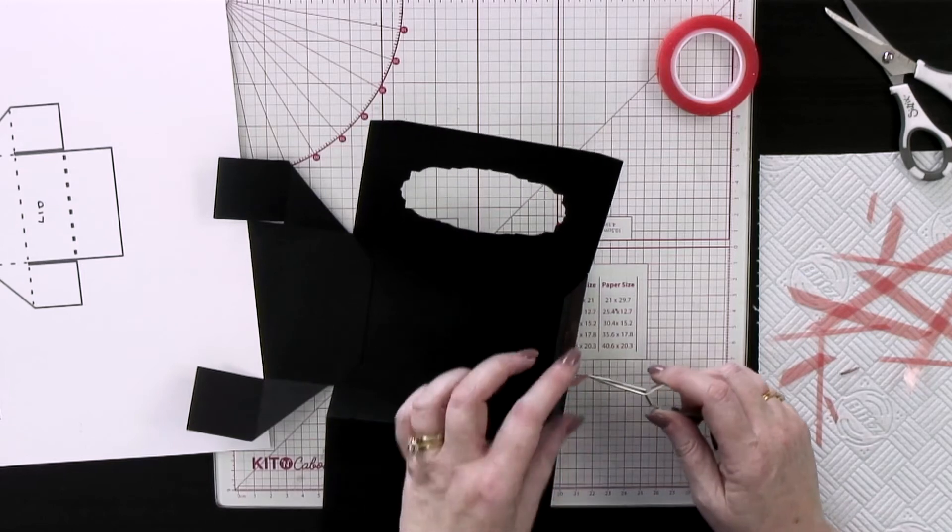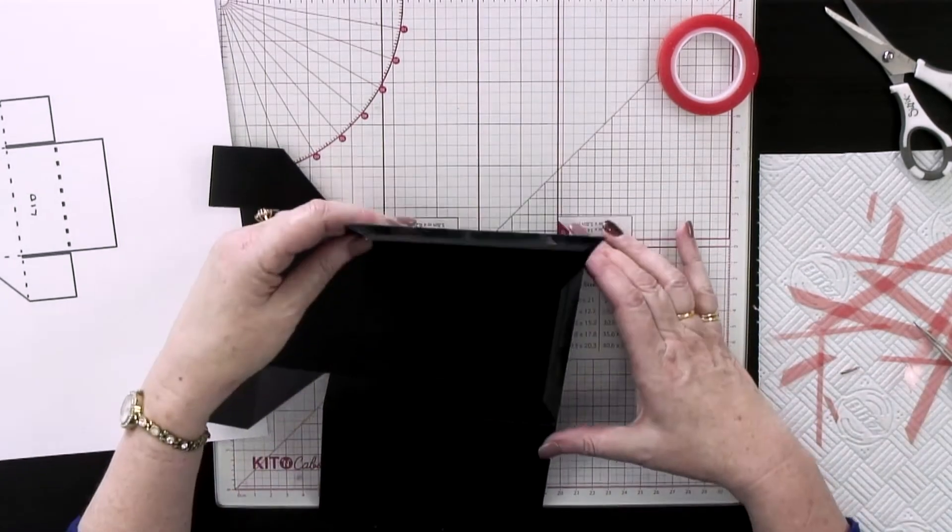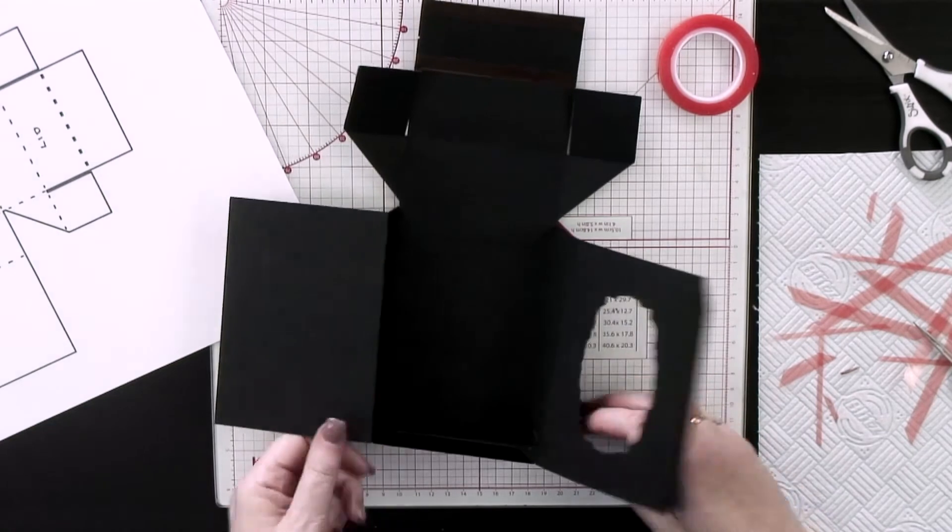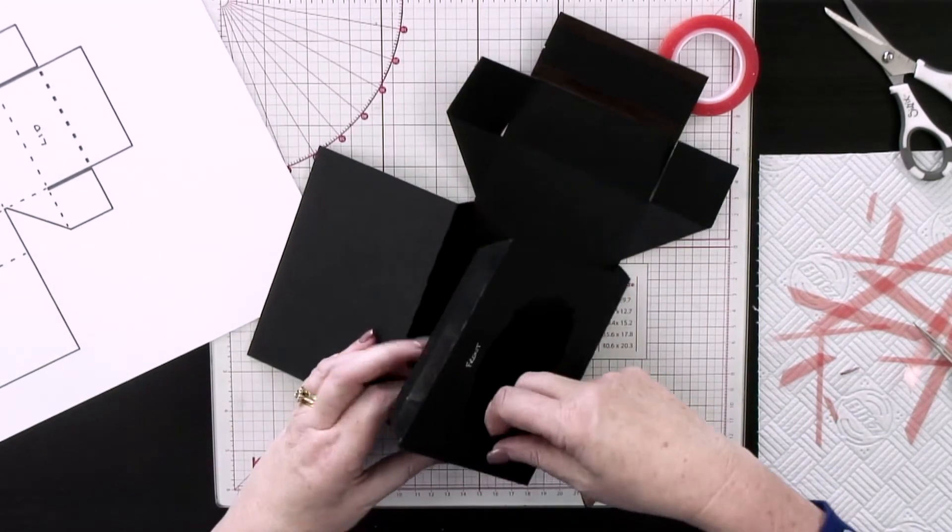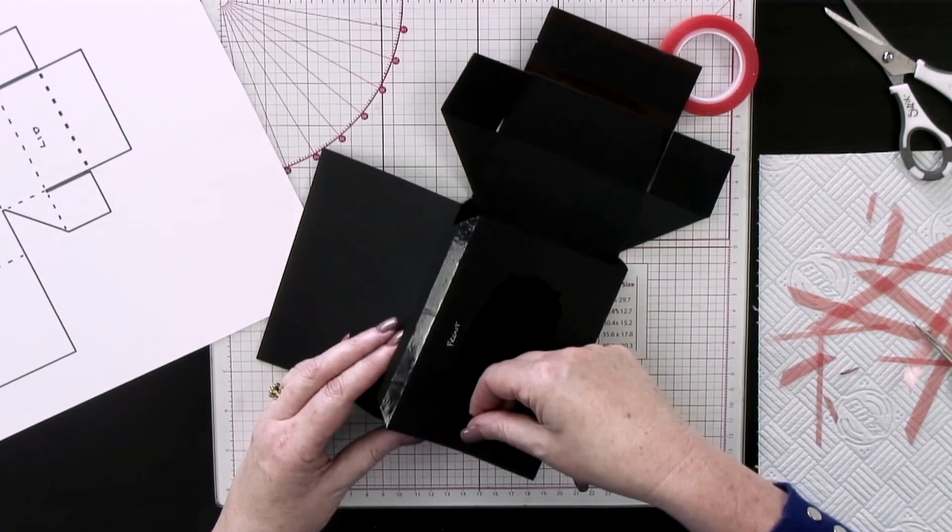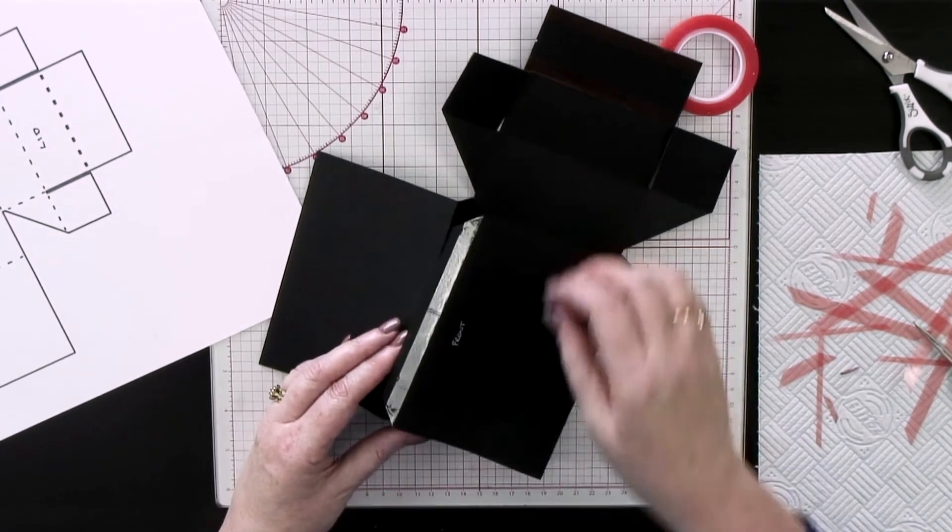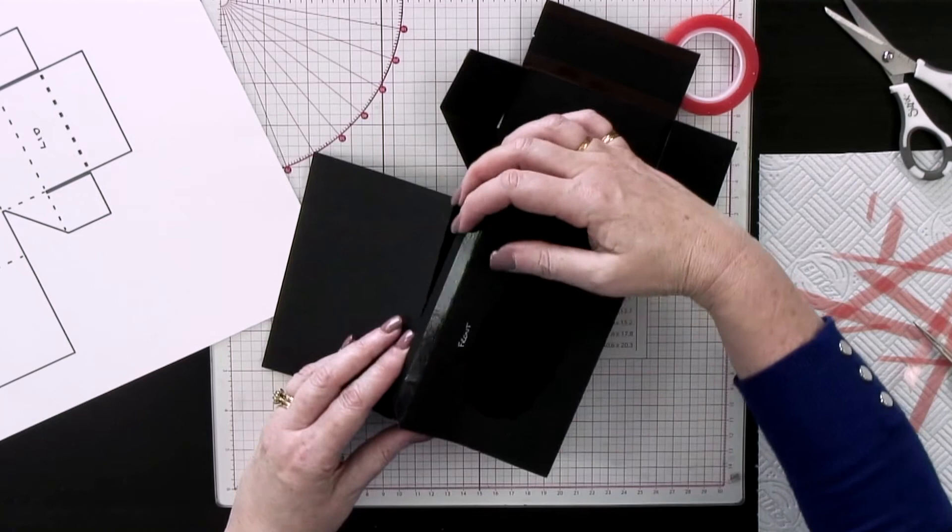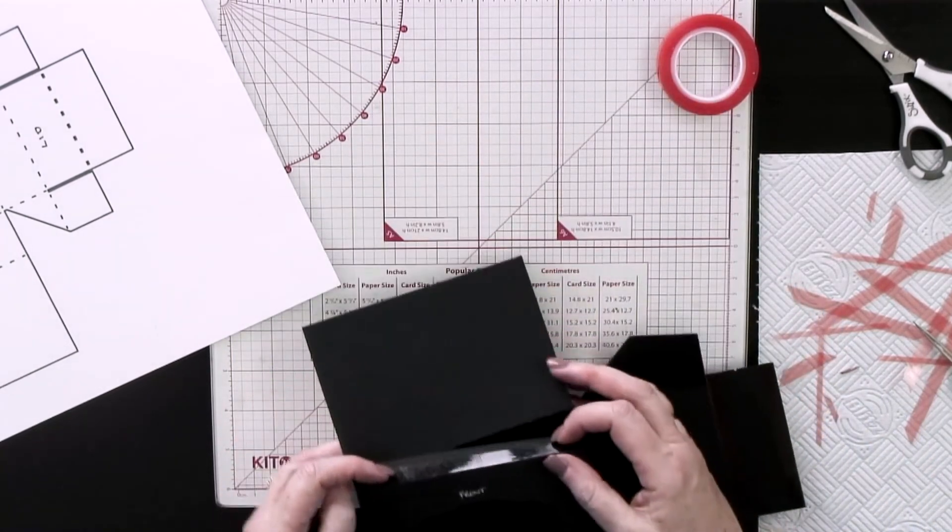What I'm going to do now is fold this over here like this. If you were going to use it as a proper box you could put some acetate behind here. As I get down I'm going to tuck that in now, so that's going to tuck in.